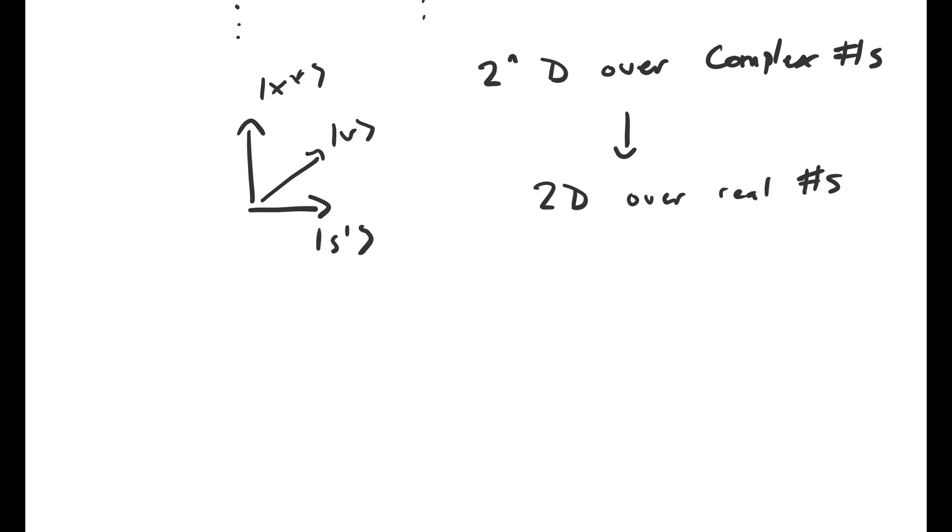So we went from needing two to the n complex numbers to describe the state of our system to just needing two real numbers to describe the state of the system. So it's really incredible that Grover's algorithm is as powerful as it is. And it comes nowhere close to utilizing the full space that a quantum computation can be carried out in.